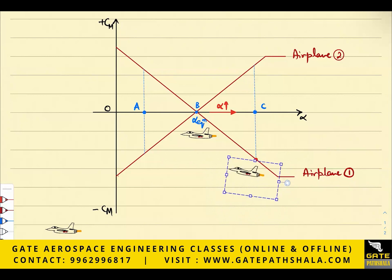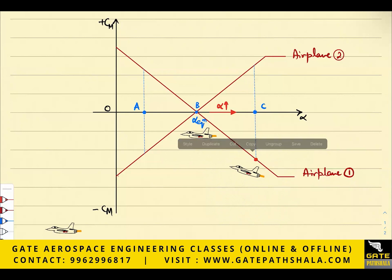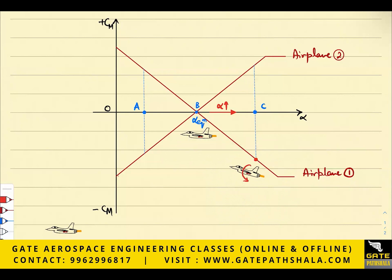The angle of attack was increased. The airplane was pitched, and the airplane is making a nose-down pitching moment. Because of this negative pitching moment, the airplane will be brought back to equilibrium — it will move towards point B, which is the equilibrium point. The design of the aircraft creates a nose-down pitching moment, so the airplane moves towards equilibrium.